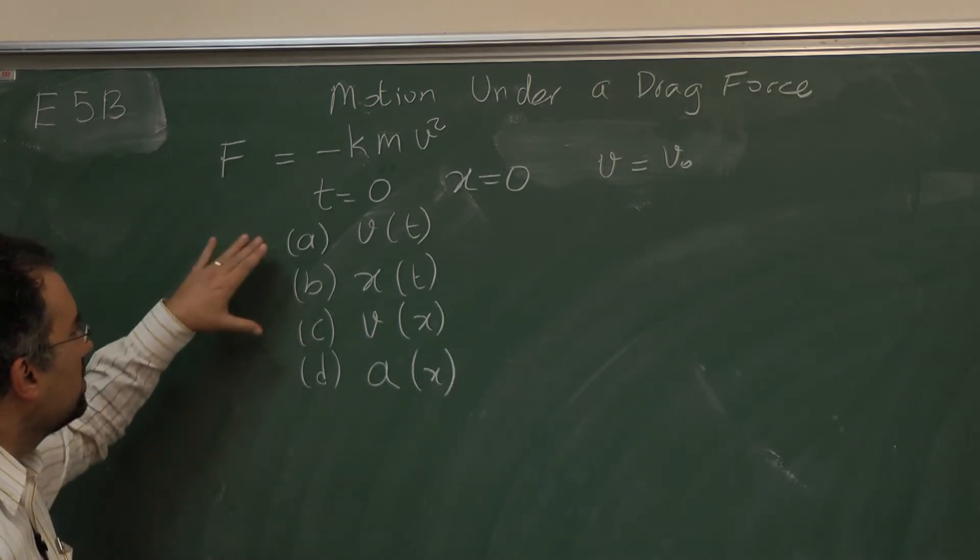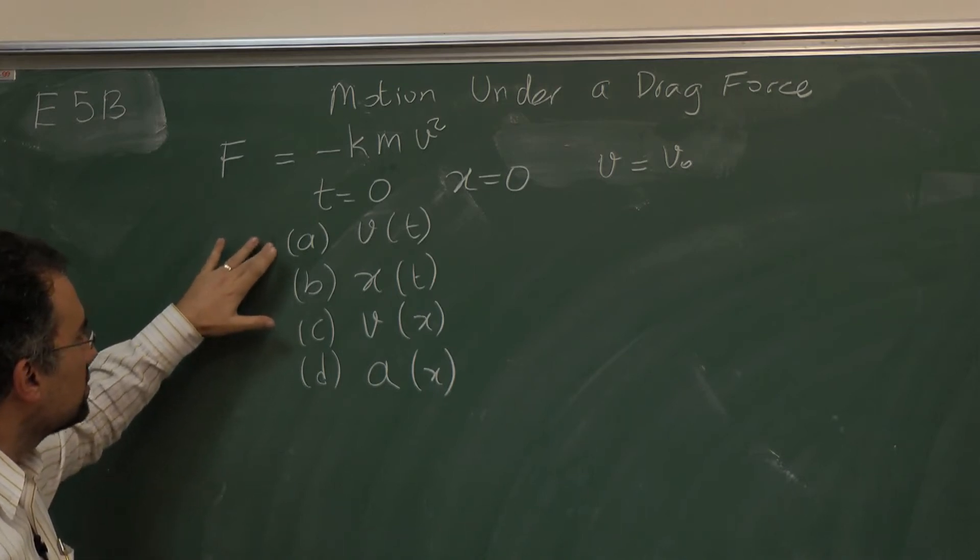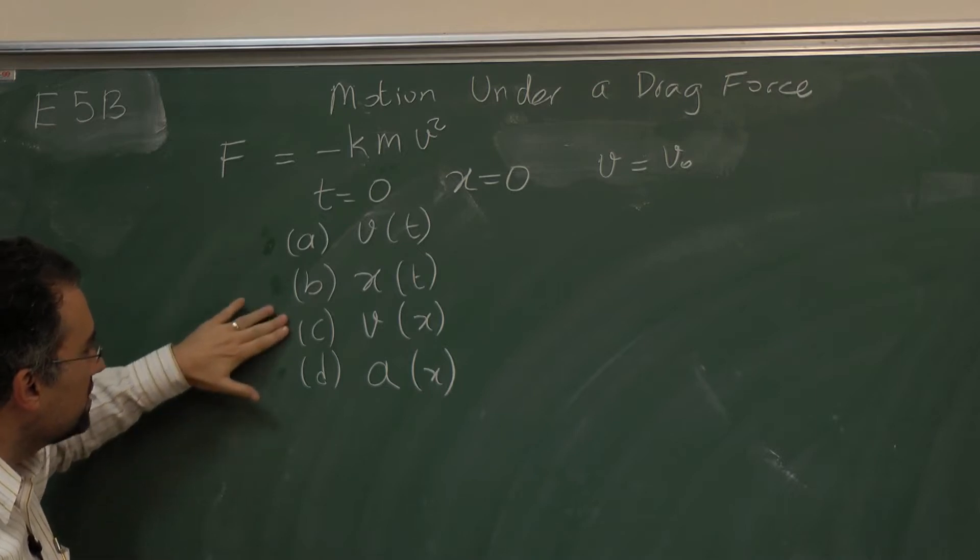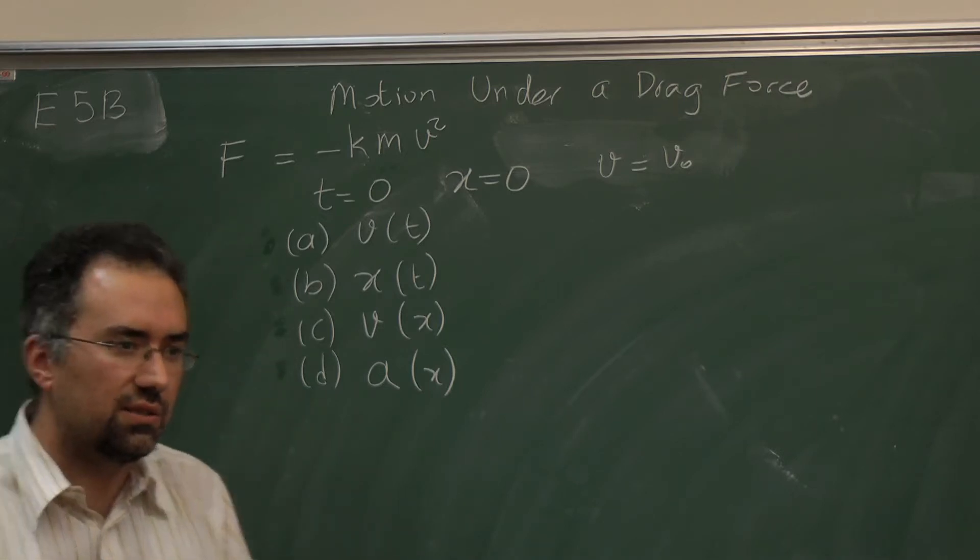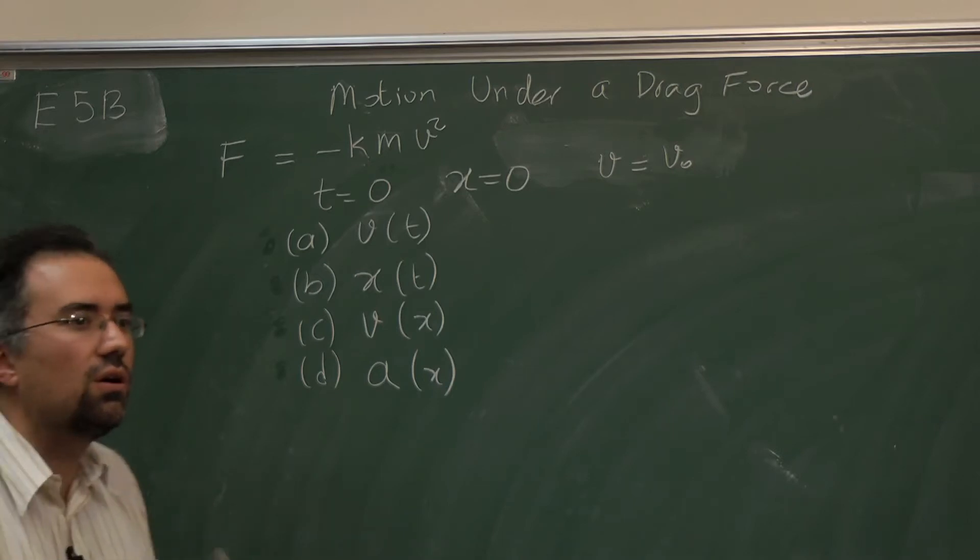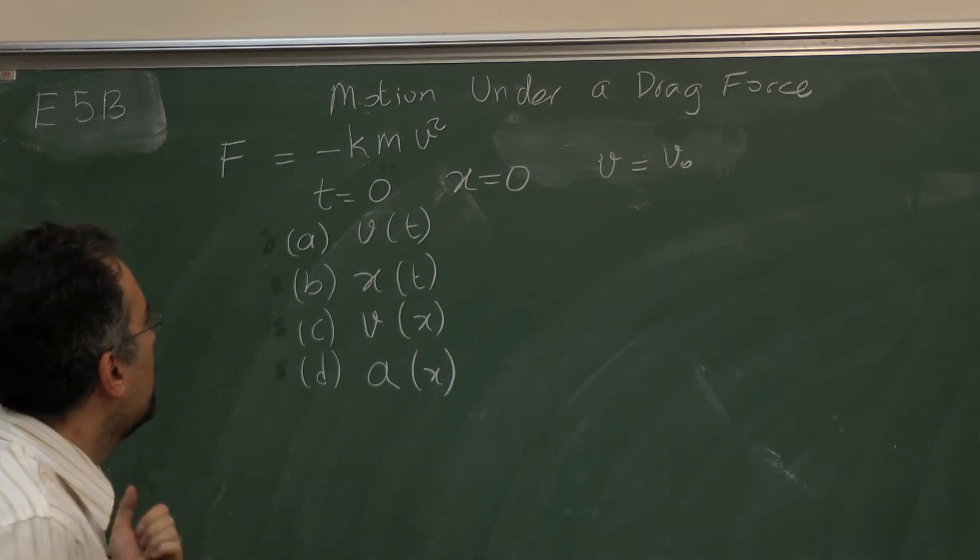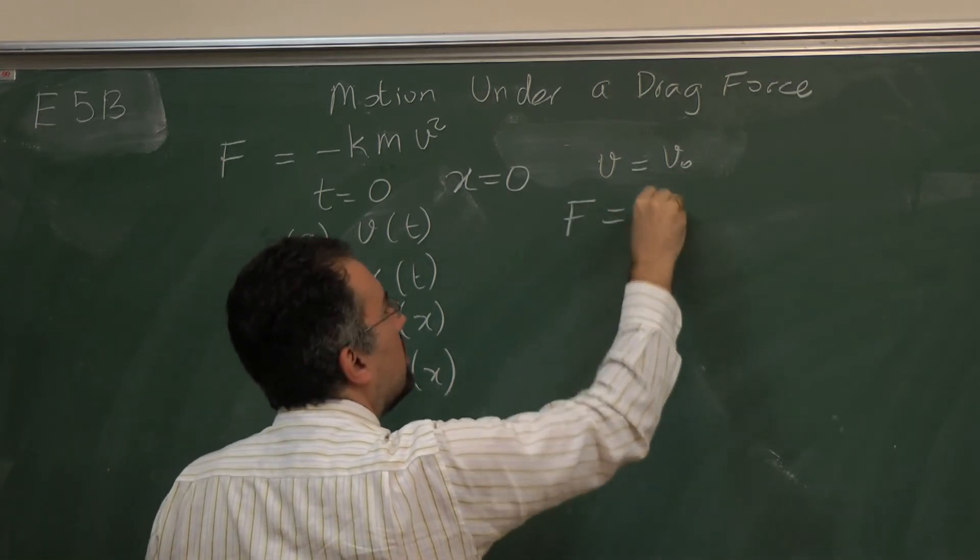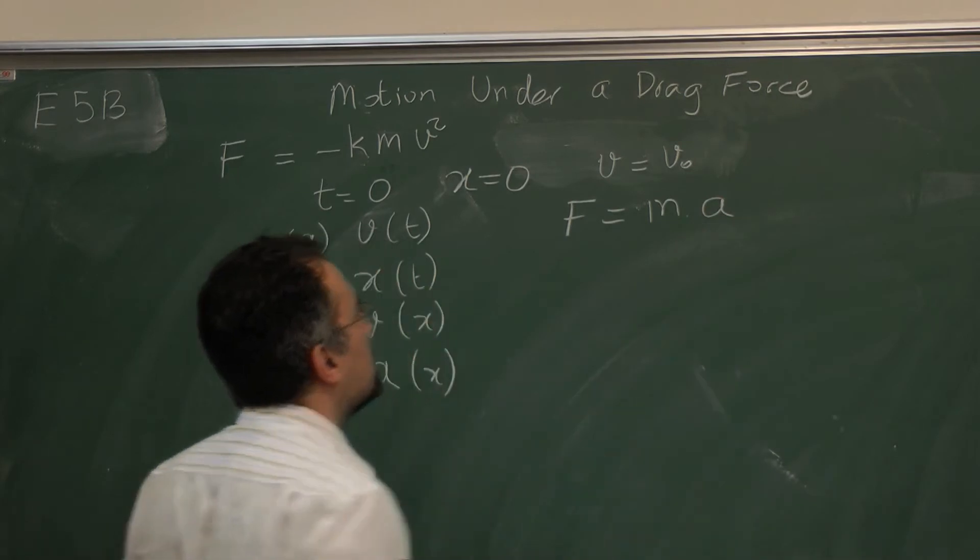And the last part asks for the acceleration of the object as a function of position again. Now in fact this is sort of a guided problem. You will see that if you find these in this order it's actually easier. What you need to write is just Newton's second law for the object.